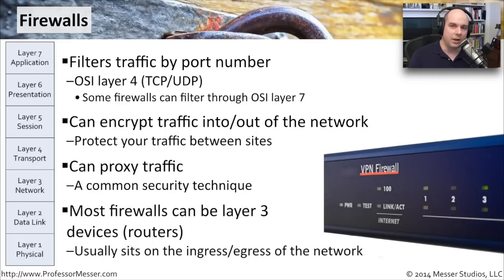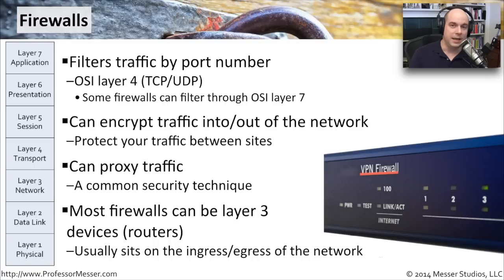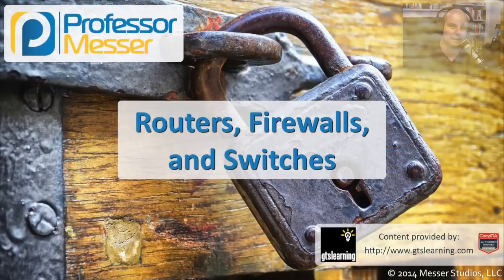Most firewalls can also be layer three devices. You'll very often see the firewall on the edge of the network performing routing and network address translation. So many times you don't have to have a separate layer three router right behind it — the firewall simply does all of that routing. Because it's right there on the edge, it can route to the internet, to a DMZ, and to the internal network as if it were a standalone router. Think of it as having routing functionality with all of these great firewalling and security technologies built right in.